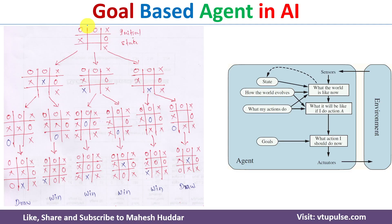To understand the goal-based agent, consider the example of a tic-tac-toe game. This is the initial state where X is the AI agent and O is the human. The AI agent has played three moves and the human has played three moves. Now there are three places where the AI agent can play, and the question is where it should play so as to win.